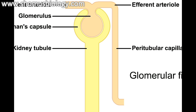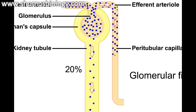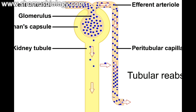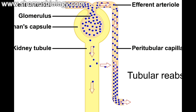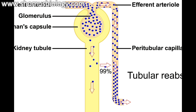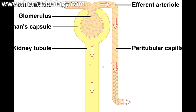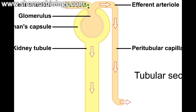Urine formation begins with glomerular filtration. About 20% of the plasma that enters the glomerulus is filtered, and the other 80% leaves through the efferent arteriole. Tubular reabsorption occurs as the filtrate flows through the tubules, and substances of value to the body are returned to the peritubular capillaries. On average, over 99% of the filtered plasma is reabsorbed and conserved for the body. The remaining 1% contains unwanted substances and is eliminated as urine.